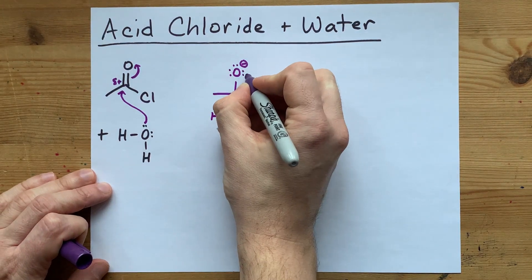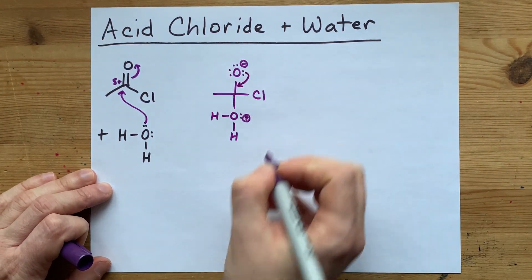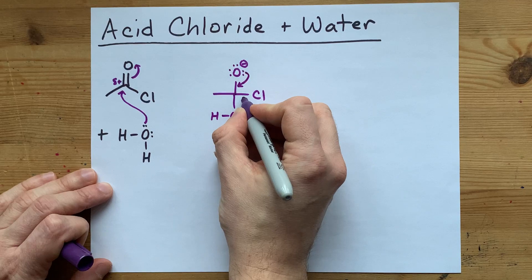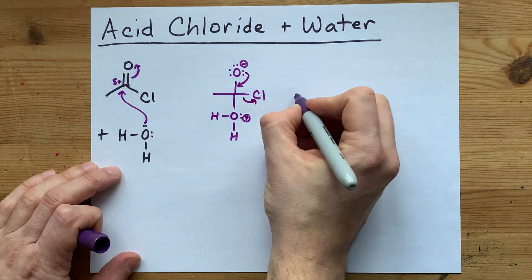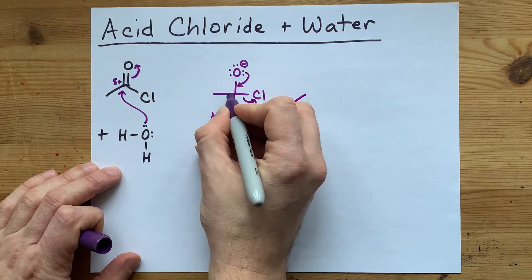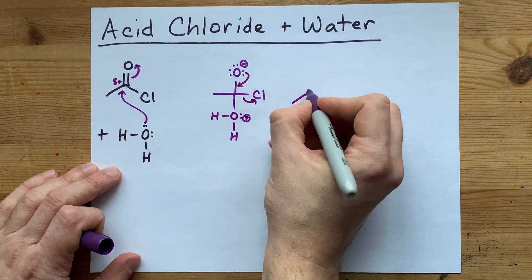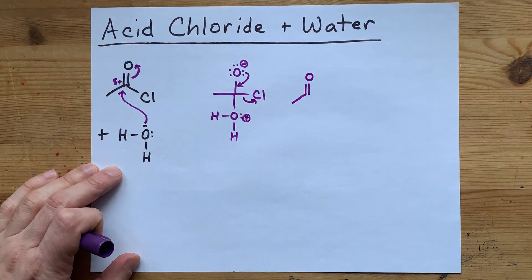Now, when this oxygen tries to reform the double bond, Cl or chloride is the one that leaves. You end up with the whatever chain was to the left here. You've reformed your double bonded oxygen.